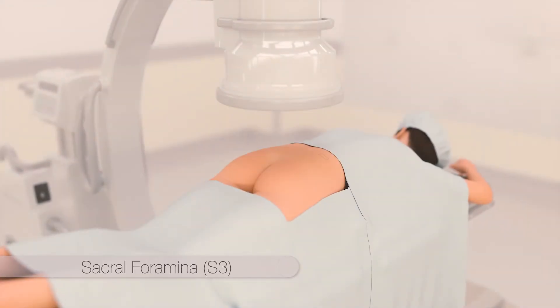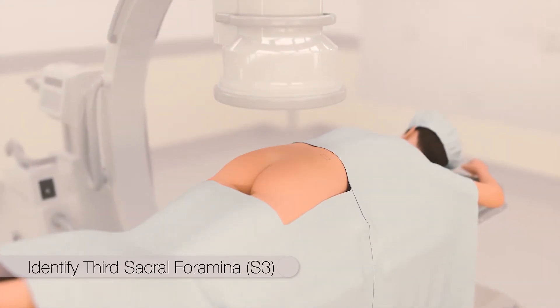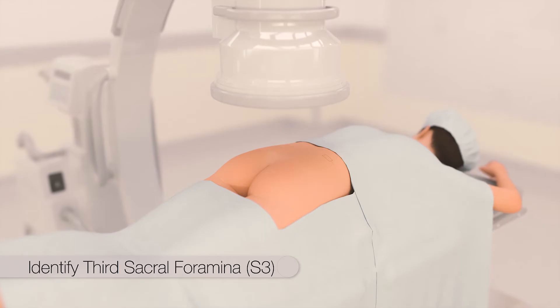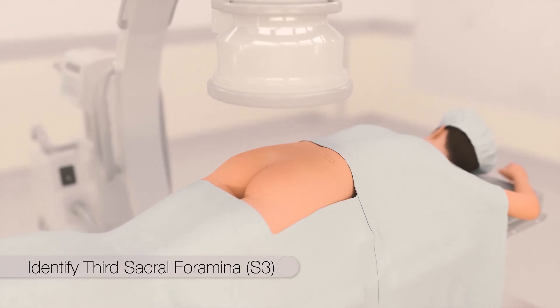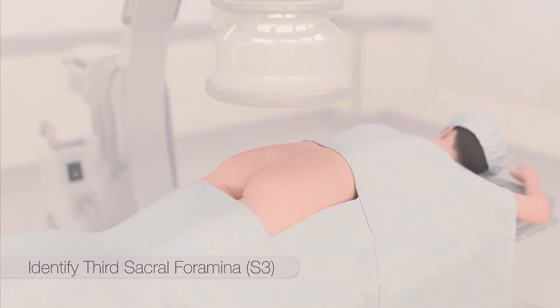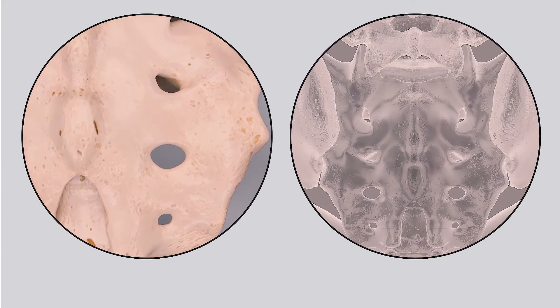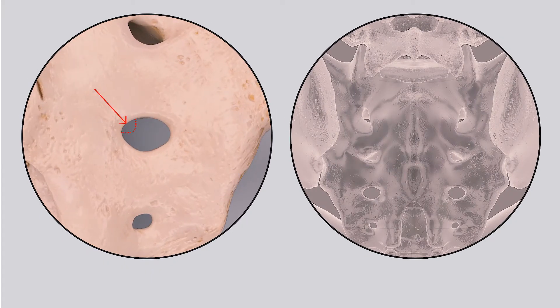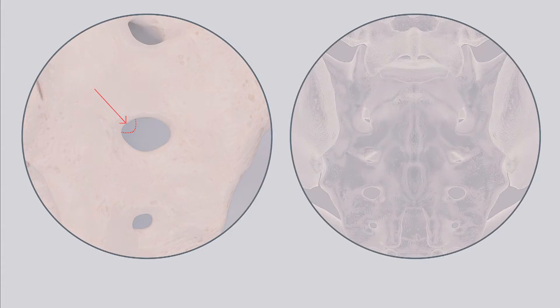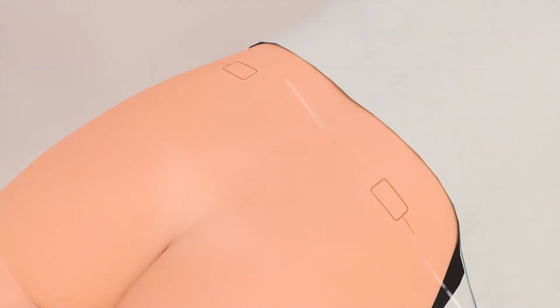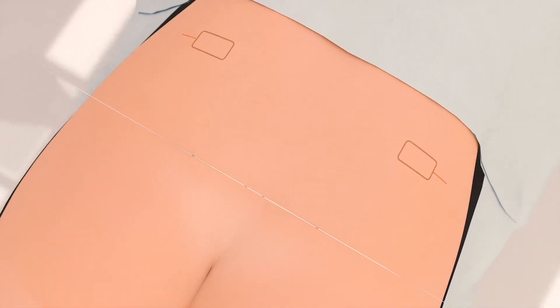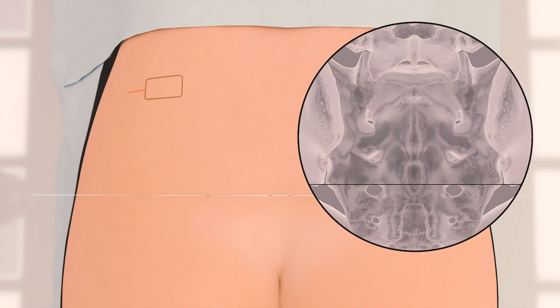Once the patient has been prepped and draped, AP fluoroscopy is used to identify the level of the third sacral foramina S3. The ideal location for lead placement is in the uppermost medial portion of S3. The directional guide is placed at the inferior aspect of the sacroiliac joint. This landmark identifies the level of S3.